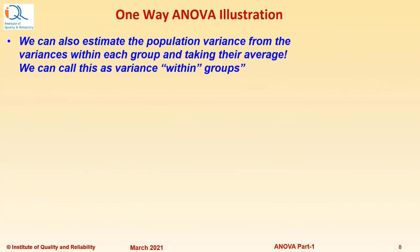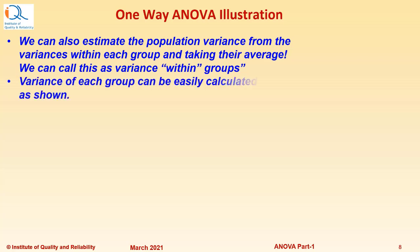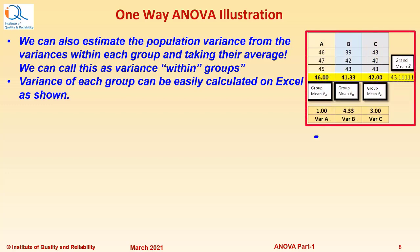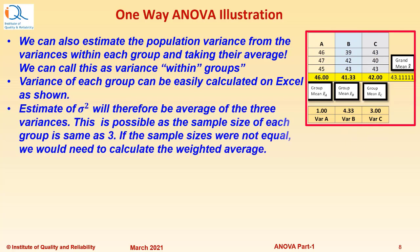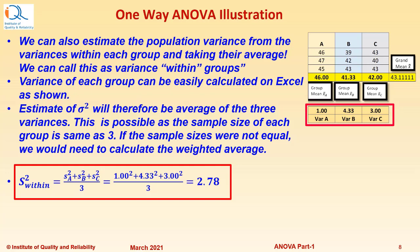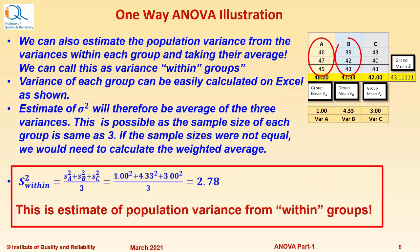We can also estimate the population variance from the variances within each group by taking their average — this is called variance within groups. Variance of each group can be calculated on Excel: variance of A is 1.00, variance of B is 4.33, and variance of C is 3.00. Since the sample size of each group is the same (n=3), the estimate of sigma squared is simply the average of the three variances. If sample sizes were not equal, we would need the weighted average. So S-squared-within equals 2.78, the estimate of population variance from within groups.